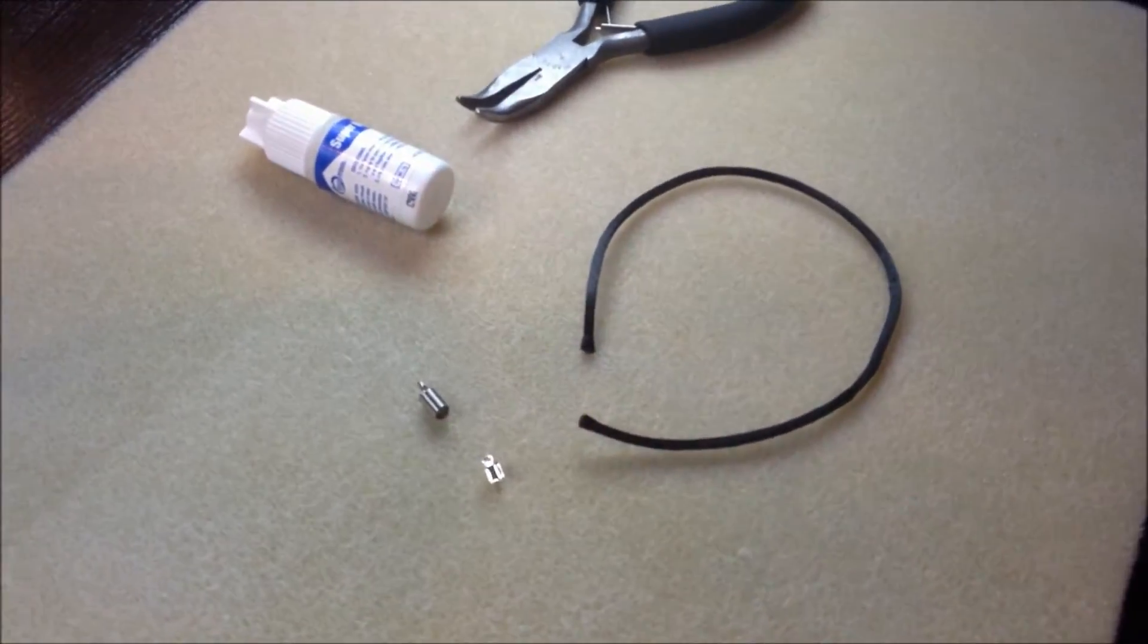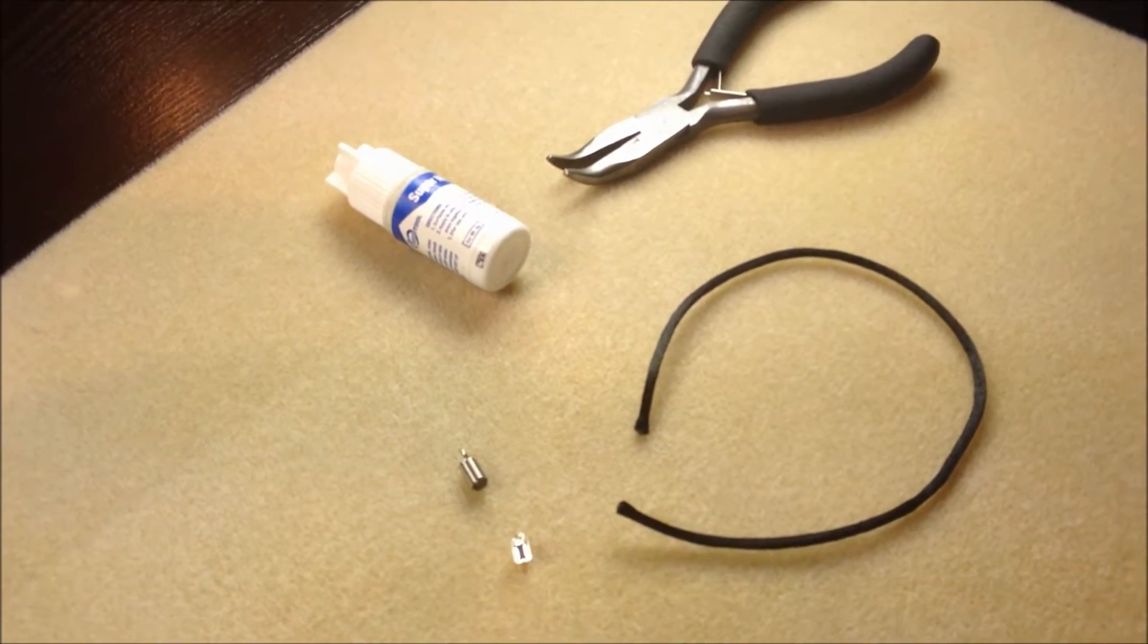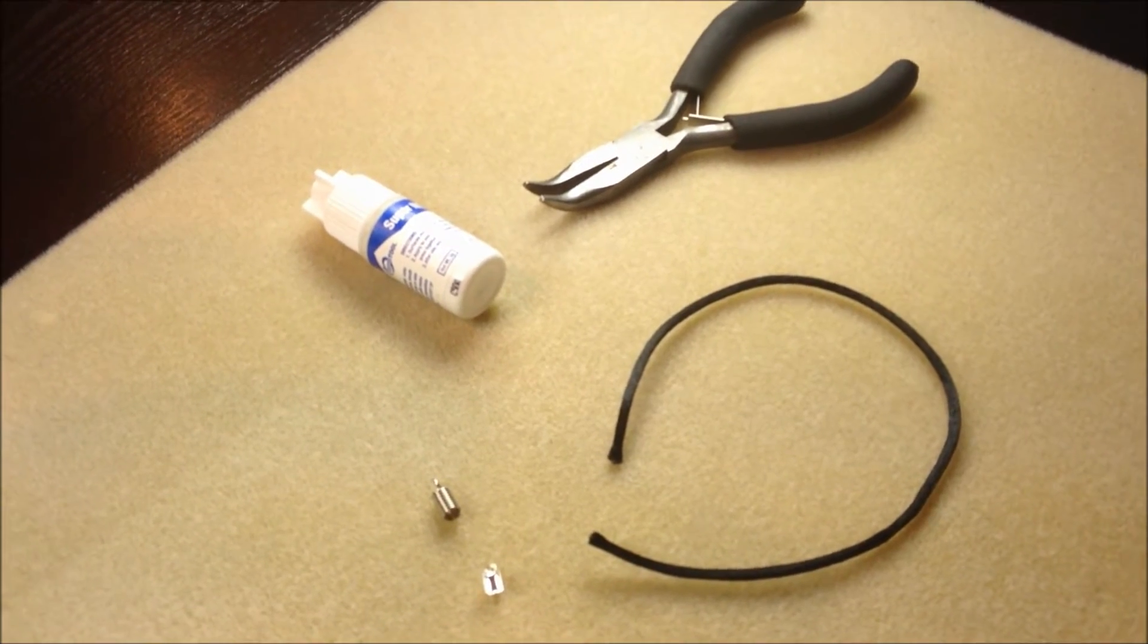For this project I'm going to be showing with satin cording called rat tail. I have super glue, a bent needle nose pliers, and two different types of ends that you can use.